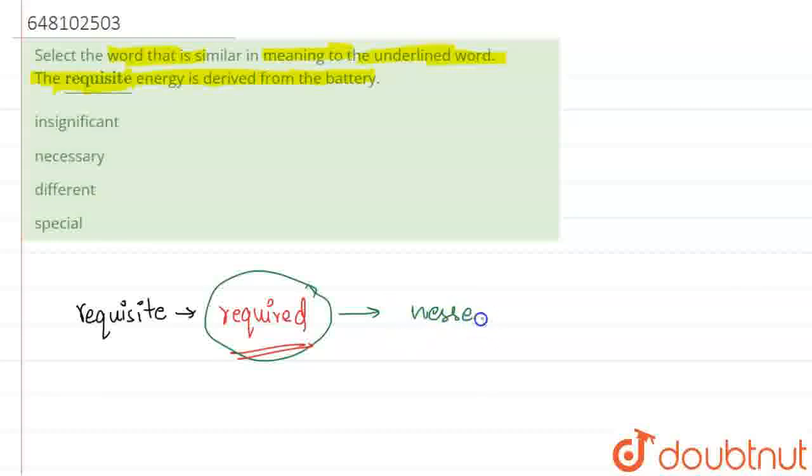So basically, over here, if we talk about our options, the only option possible is necessary because required is a synonym for necessary. Okay. So necessary. Necessary.